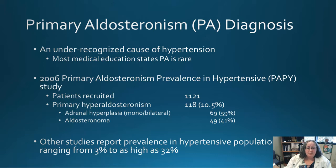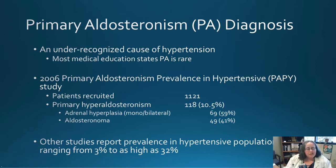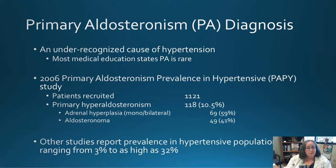Of those with PA in the study, 59% had adrenal hyperplasia and 41% had an aldosteronoma, a tumor form. Other studies report prevalence in hypertensive populations anywhere from 3% to as high as 32%. Most studies on primary aldosteronism have been exceedingly small, partly because people think it's rare, so there's not enough funding to determine the full extent of PA in the hypertensive community.